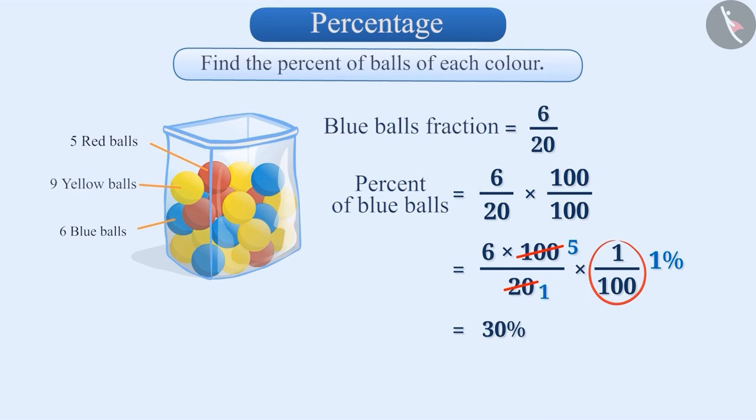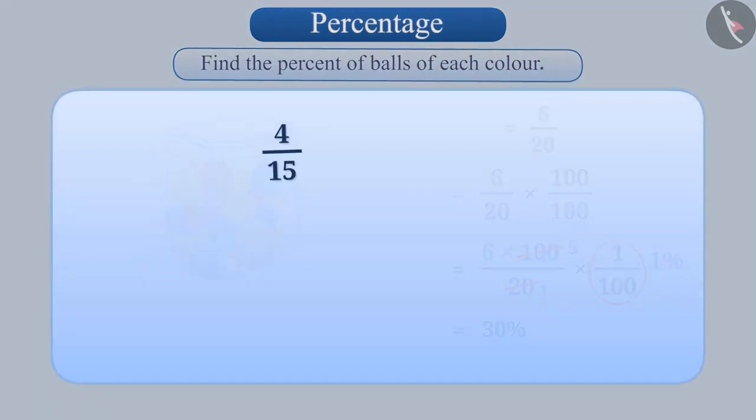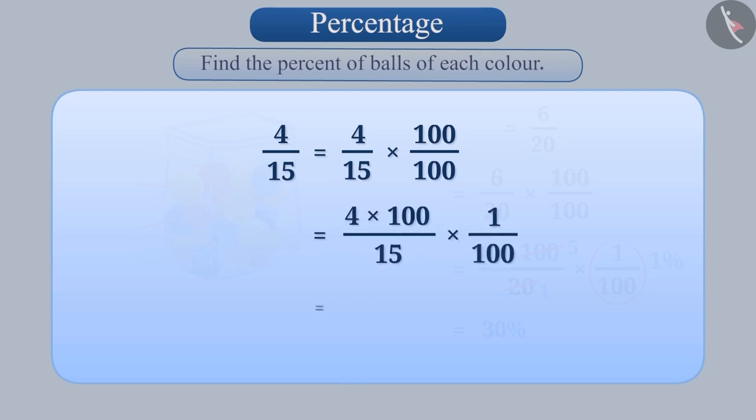This method is very effective in situations where there is a difficulty in converting the denominator of a fraction to 100. For example, to express 4 by 15 as a percent, we will multiply 4 by 15 into 100 by 100 which is equal to 4 into 100 by 15 into 1 by 100 which is equal to 400 by 15% which is equal to 26 2 by 3%.